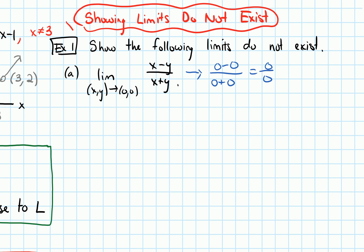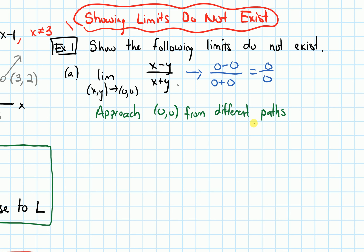So to show this limit does not exist, let's try approaching the point (0,0) from different paths. As we saw in the last video, to show a limit does not exist, we just have to find two paths along which the limit is different.